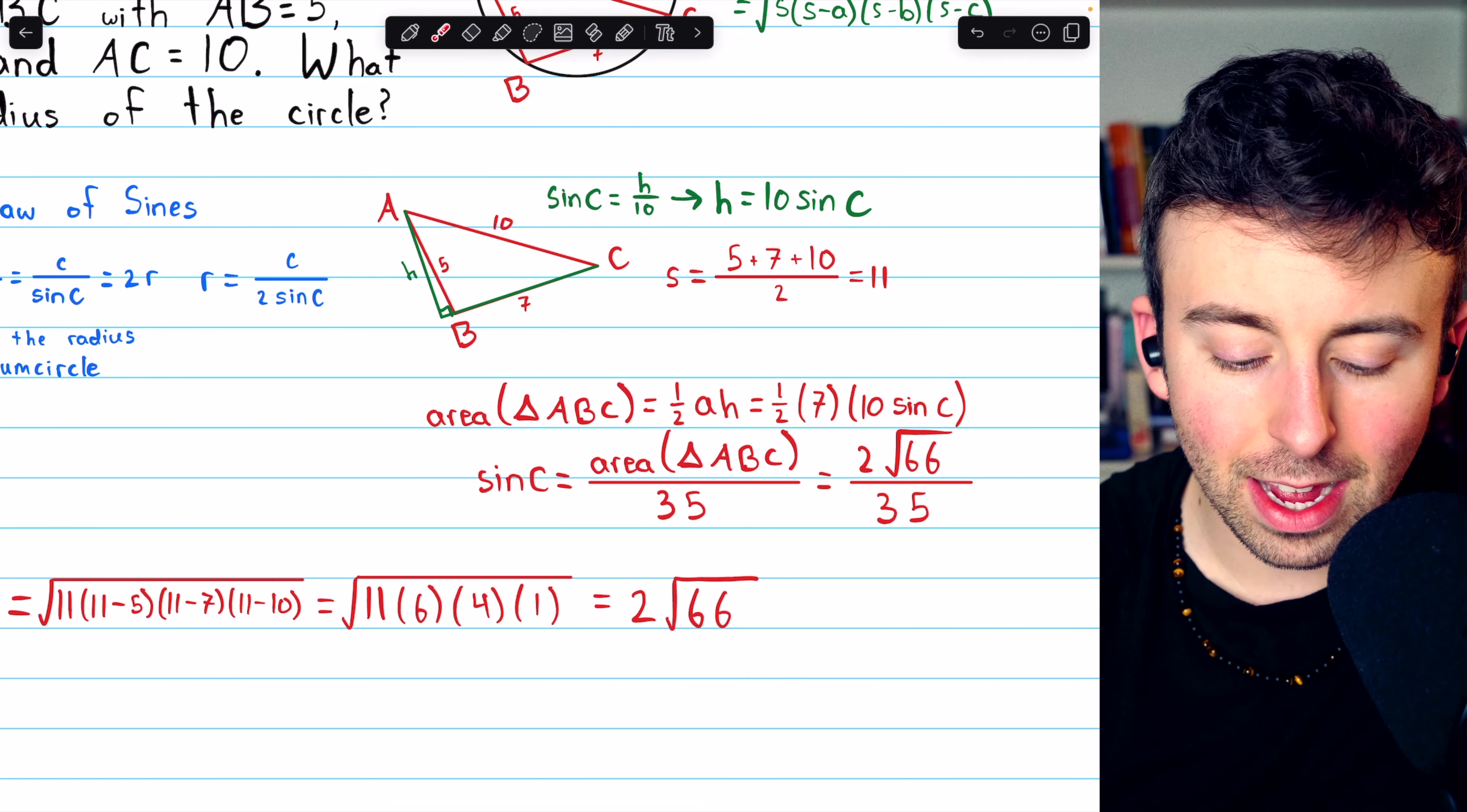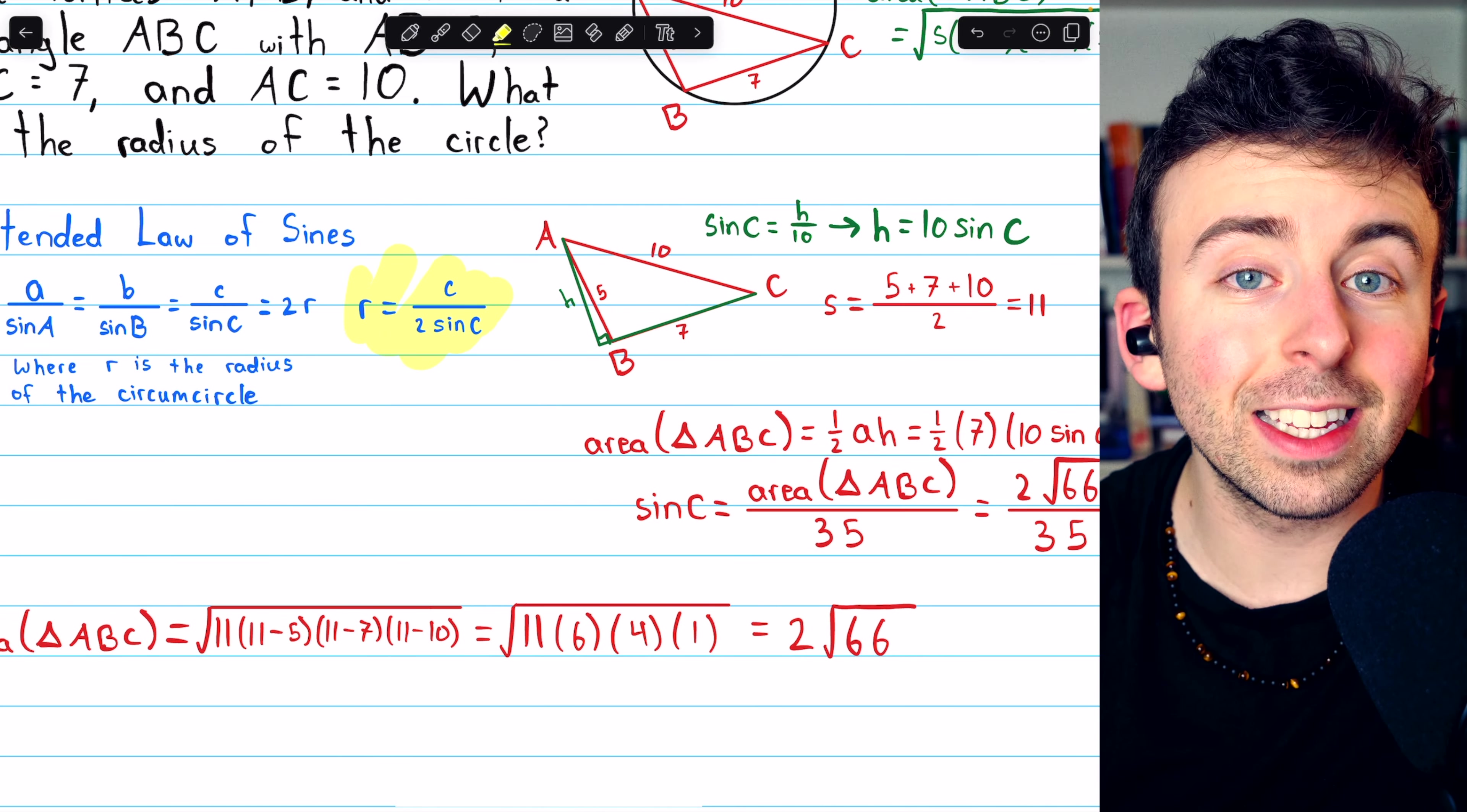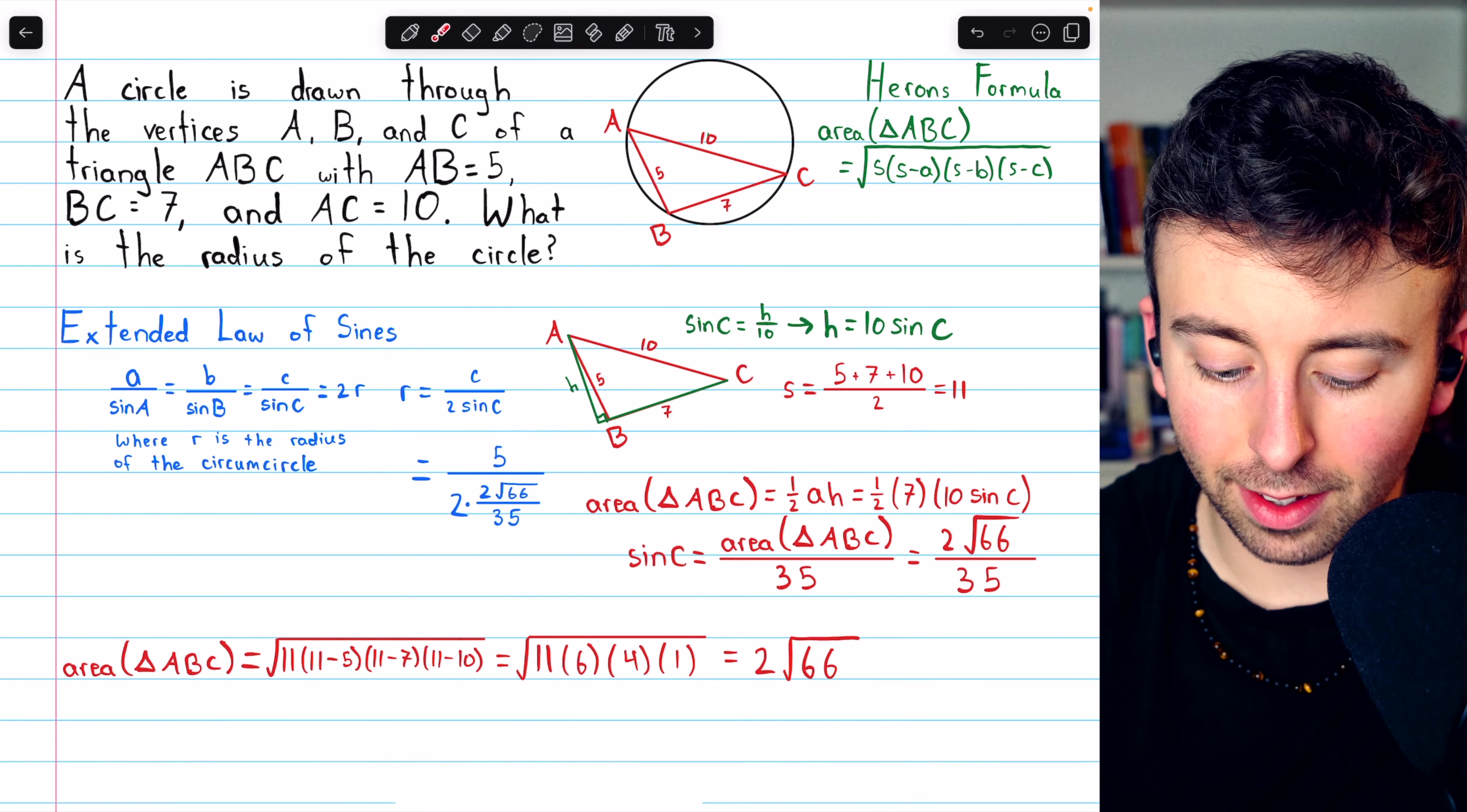Now this is sine C, so we can replace sine C in this equation, and finally solve for the radius r of the circumcircle. And here that is.